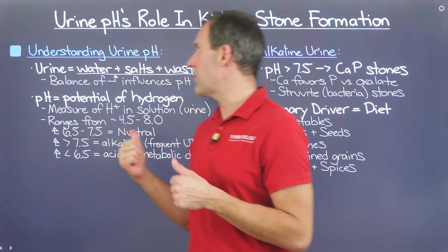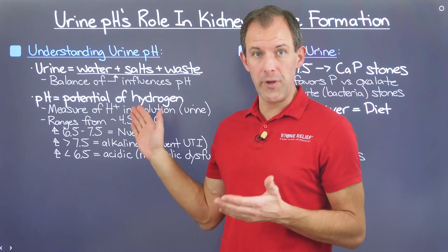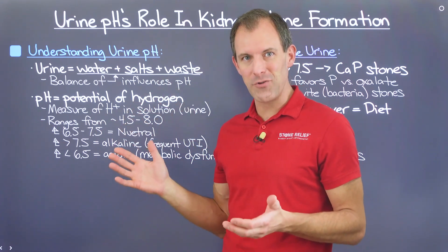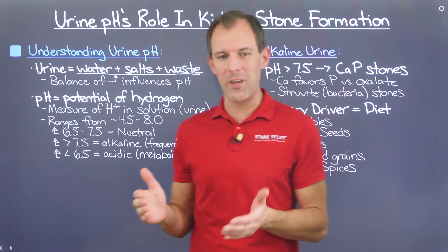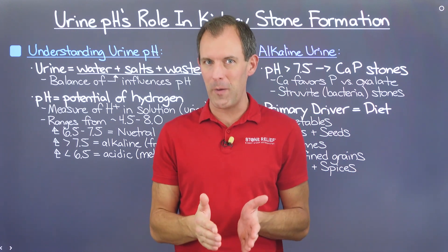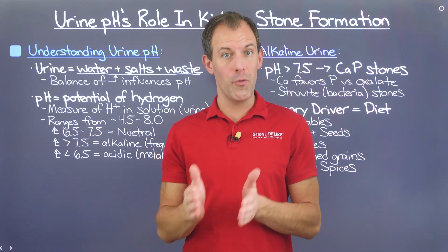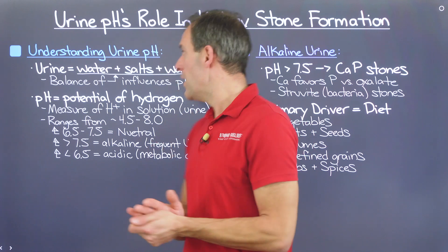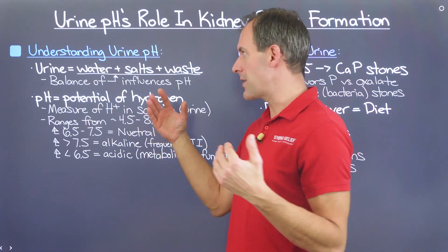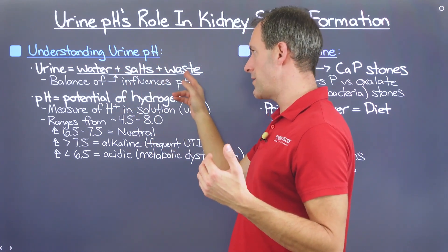The first place we're going to start is by truly understanding what urine pH is and what it actually means, so that we can understand the context when we talk about being acidic, alkaline, or neutral. Urine at the baseline is a combination of water, salt, and waste.